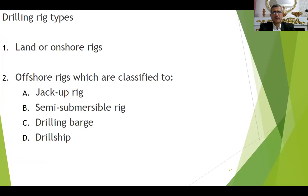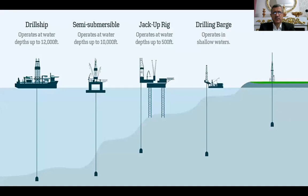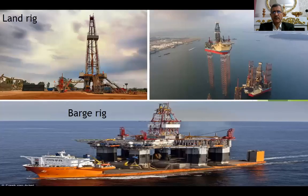Drilling rigs — we have types of rigs. We have five types: one for onshore rigs and four for offshore rigs, including jackup rig, semi-submersible rig, drilling rigs, and drill ship. It depends on the depth where this rig will drill. We start with the onshore land rigs, then offshore in the sea starting with the drilling barge, then jackup rig, then semi-submersible, then drill ship.